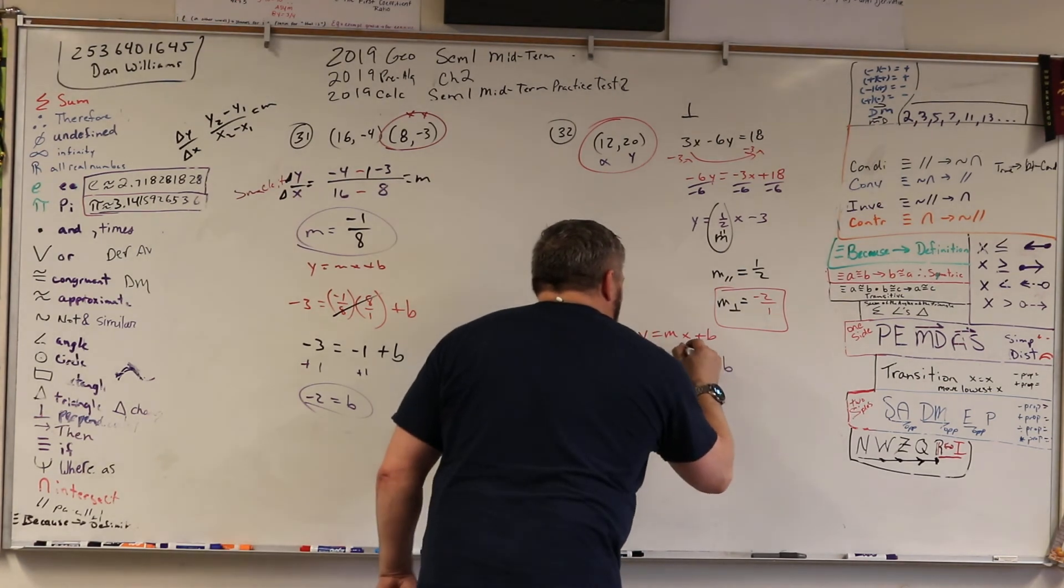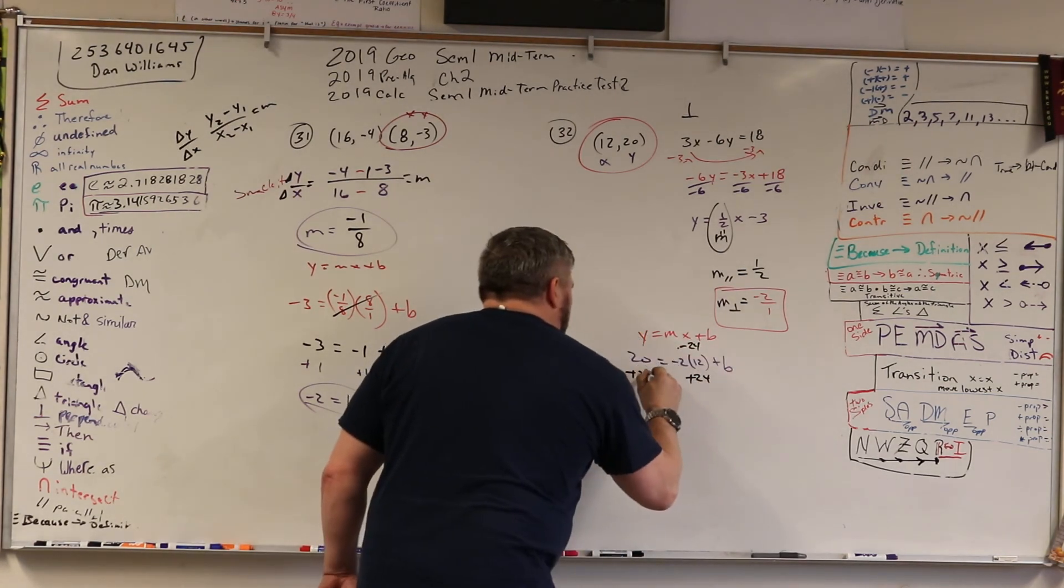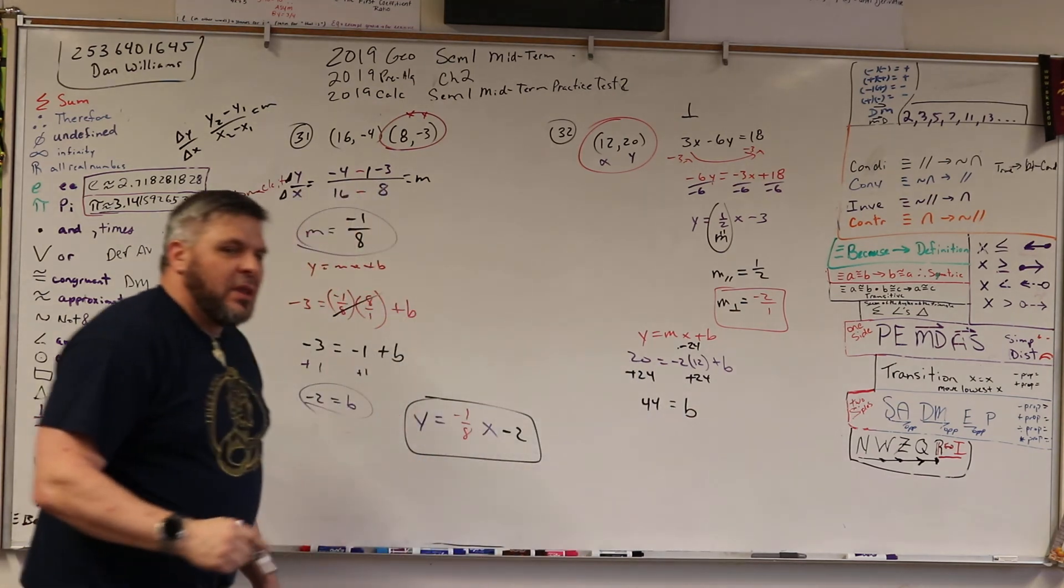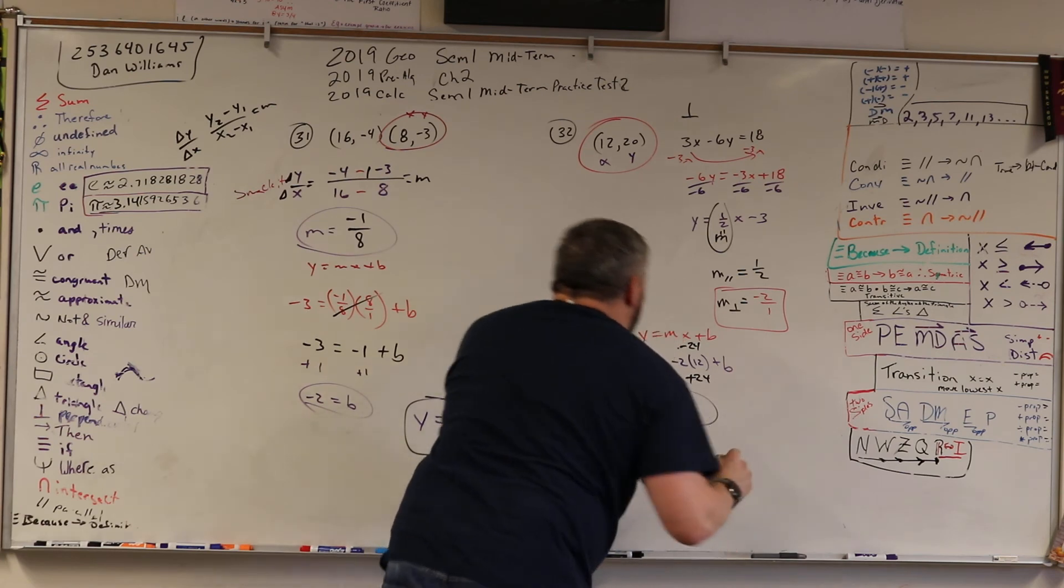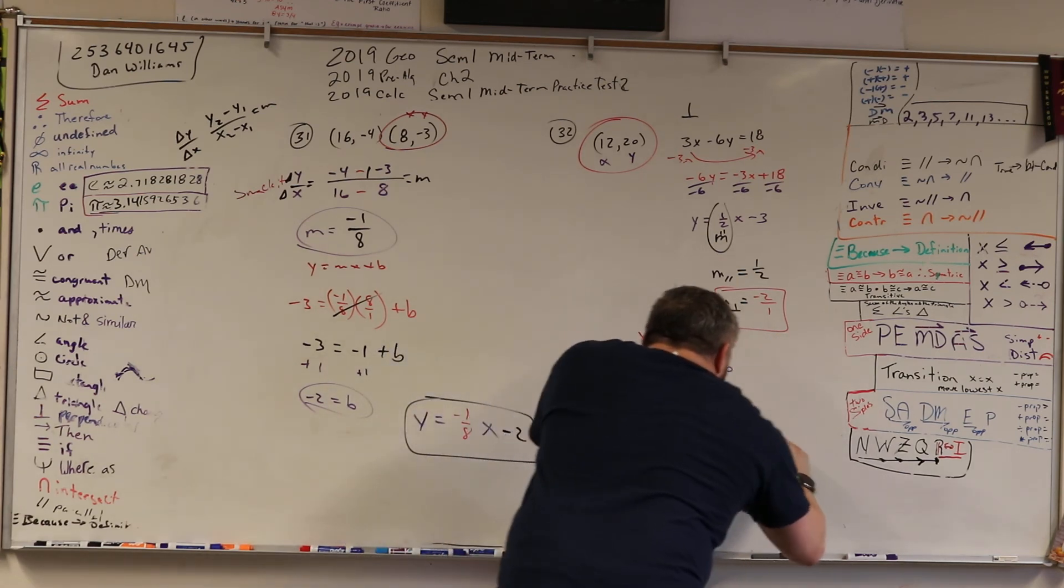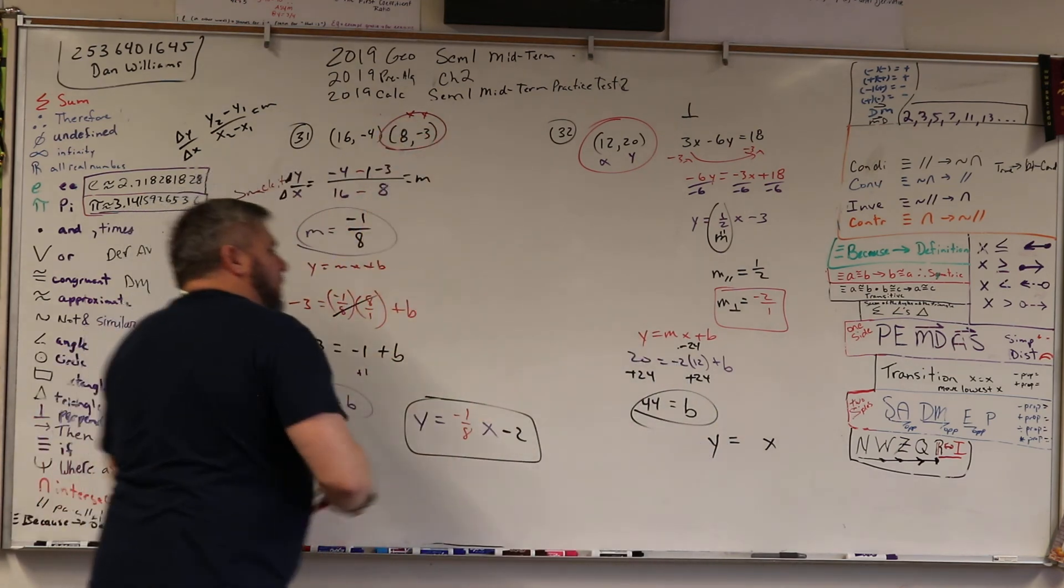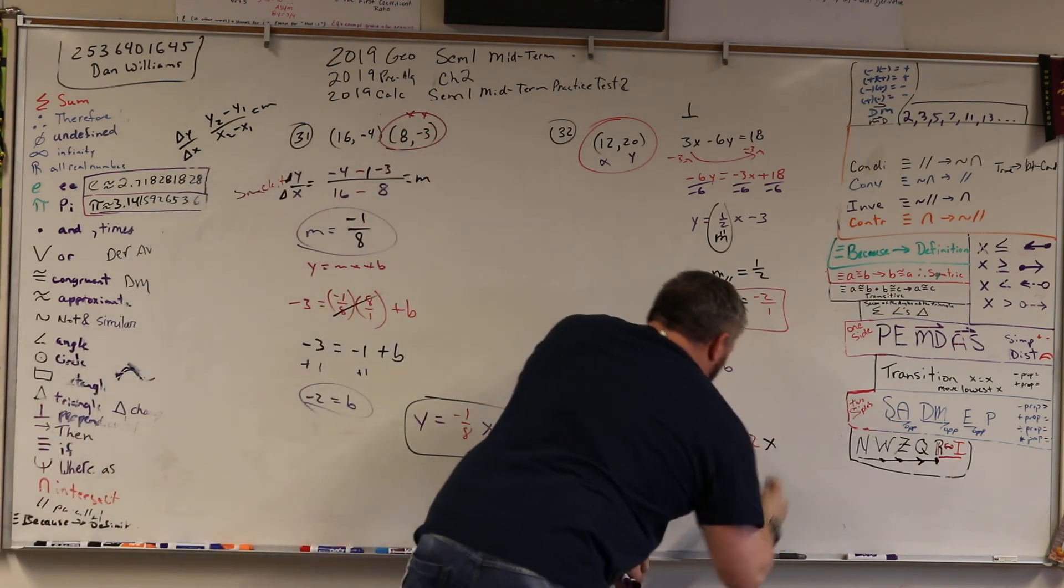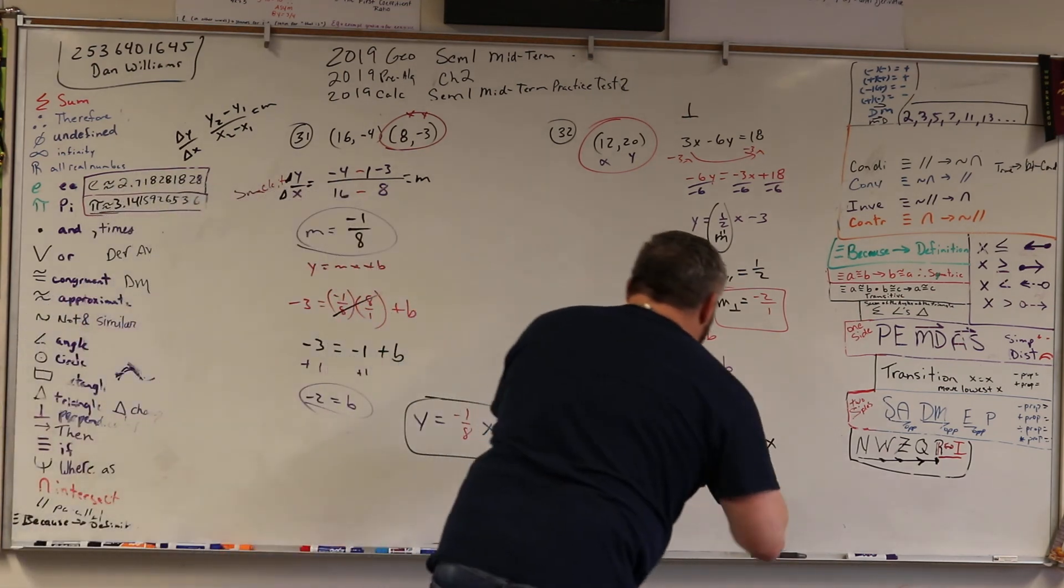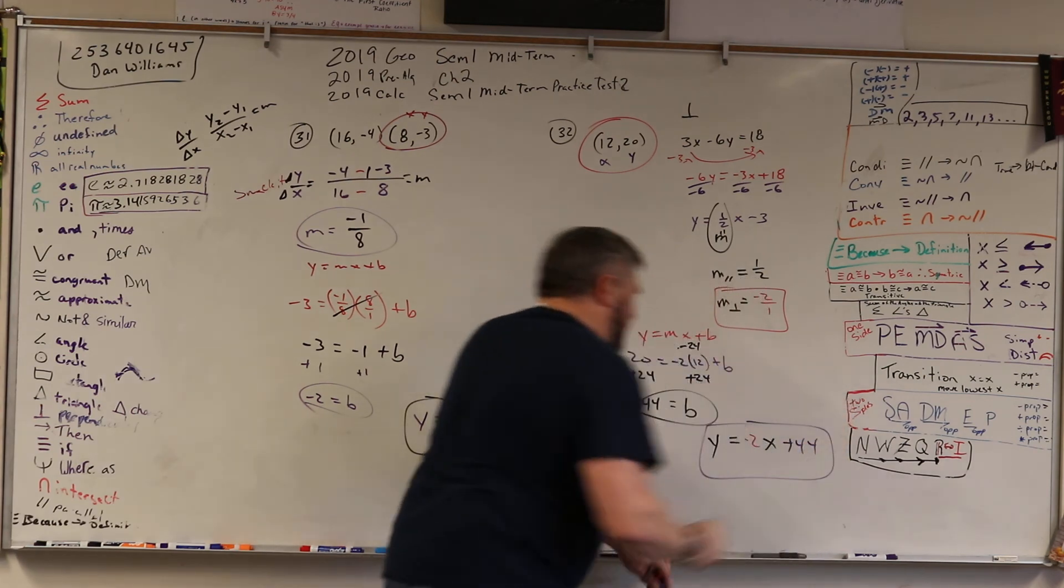This is really negative 24, so I'm going to add 24. I'm going to add 24, so I get 44 equals b. Once I have b and m, I got y equals x. Whereas my slope is negative 2, and my b is plus 44. And there I go.